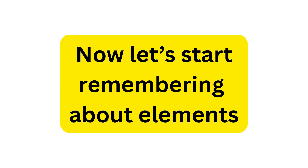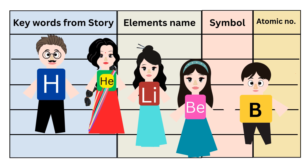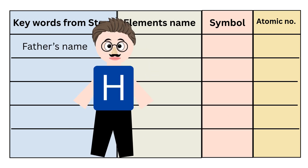Now let's start remembering the elements. Let's pick up some key words from the story which will be used to remember element names and symbols. Firstly, remember the five family members' names for the element name and symbol. Secondly, count them in order for the atomic number. Now let's move forward — for the first element, remember the father's name, that is Hydrogen.